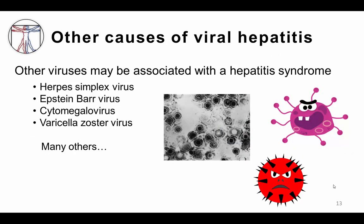It's important to know that while the hepatitis viruses specifically target the liver, there are also many other viruses — such as the herpes viruses shown here — that can cause liver damage as one aspect of their clinical presentation. We won't get into all of these viruses today, but viral serologies and PCR can also help you to detect these important causes of hepatitis.